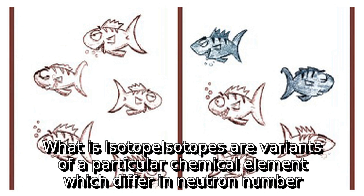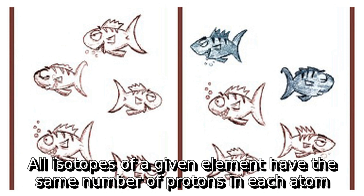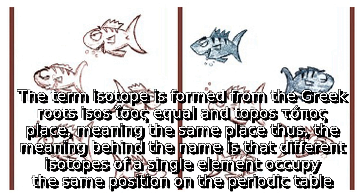What is an isotope? Isotopes are variants of a particular chemical element which differ in neutron number. All isotopes of a given element have the same number of protons in each atom. The term isotope is formed from the Greek roots isos (equal) and topos (place), meaning the same place — thus different isotopes of a single element occupy the same position on the periodic table.